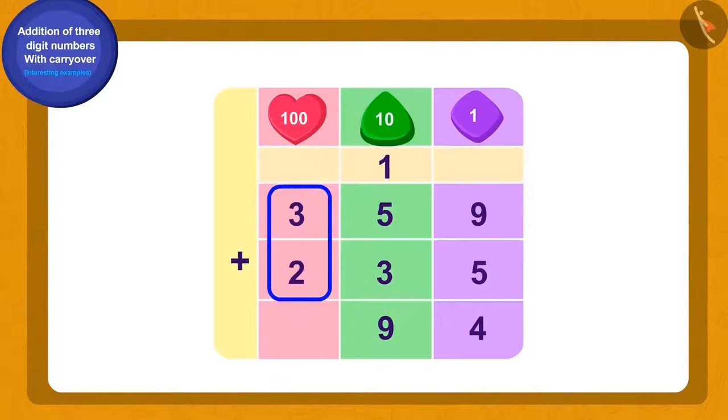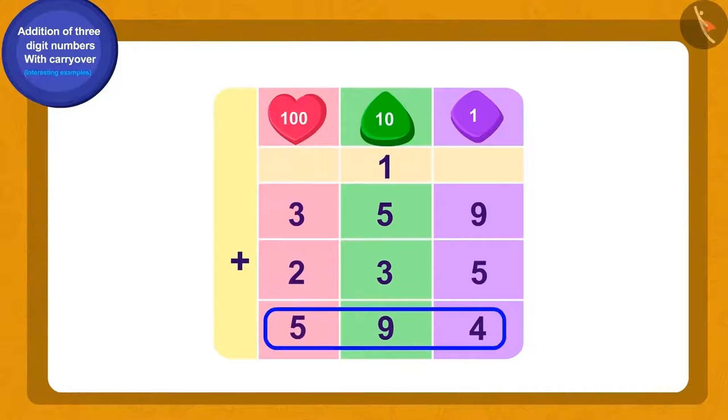Now, we will add the hundreds place numbers. 3 and 2 and get 5. Oh, wow! This time there were 594 animals in the herd.